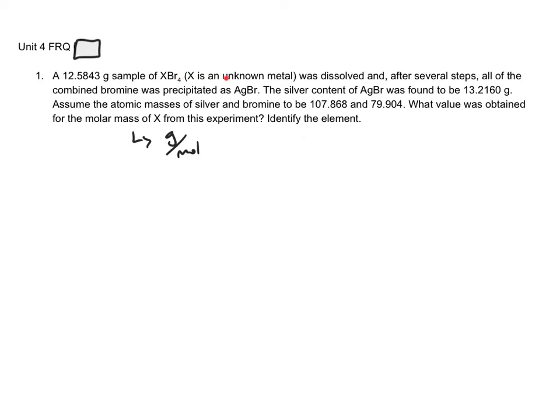So we know that all of this substance is dissolved, and after several steps, all of the bromine was precipitated in the form of AgBr. So if we can determine how much Br there was in the AgBr, then we'll be able to use that and figure out how much bromine was in the XBr4.